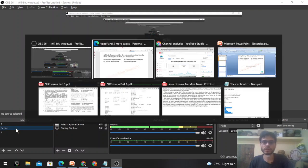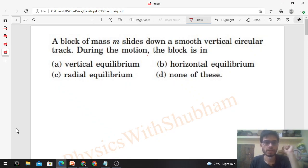Okay, hi everyone. So today let us discuss this interesting problem. It says a block of mass small m slides down a smooth vertical circular track. During the motion, the block is in: vertical equilibrium, horizontal equilibrium, radial equilibrium, or none of these.